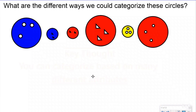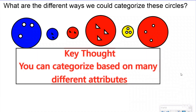The key thought here is that you can categorize based on many different attributes. We put these into groups based on color — that was one attribute. We put them into groups based on size — that was another attribute. We put them into groups based on the shape inside the circle — that's a different attribute. There are at least a few other attributes you could use to categorize.